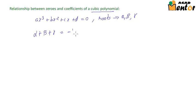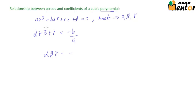That gives us minus b by a. The product of roots is given as minus the constant term d divided by the coefficient of x³, which is a, so this is minus d by a.